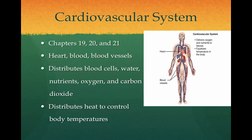The cardiovascular system includes major organs such as the heart, the blood, and the blood vessels. This system distributes blood cells, water, nutrients, oxygen, and carbon dioxide throughout the body. The cardiovascular system also distributes heat and helps control body temperature. This system will be studied in Chapters 19, 20, and 21.